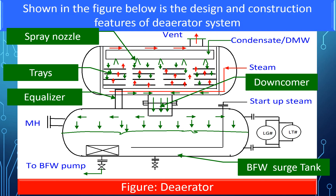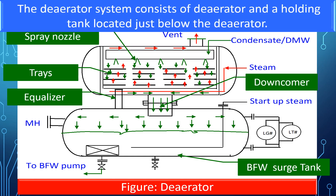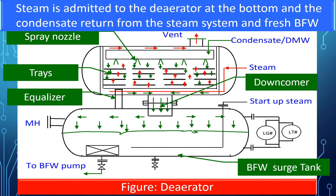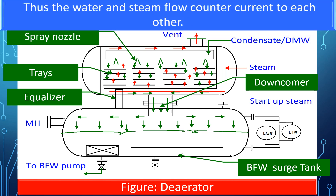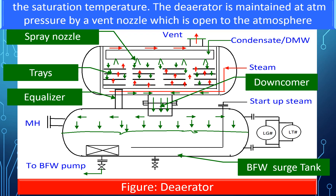Shown in the figure below is the design and construction features of the de-aerator system. The de-aerator system consists of a de-aerator and a holding tank located just below the de-aerator. The removal of dissolved gases takes place in the de-aerator, which consists of several rows of perforated trays fitted inside. Steam is admitted at the bottom, and the condensate returned from the steam system and fresh boiler feed water enters the top of the de-aerator and is distributed over the trays by spray nozzles. Thus, the water and steam flow counter-current to each other, and the falling condensate and boiler feed water comes into contact with the upflowing steam on the trays and gets heated up to the saturation temperature.